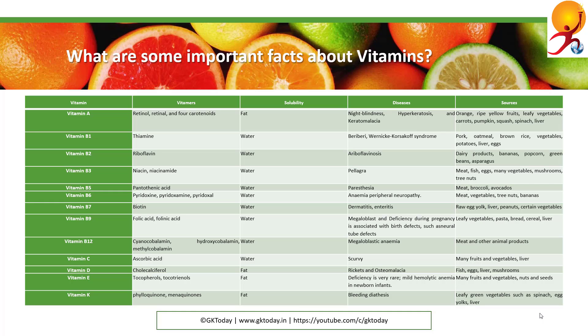Vitamin B5 is pantothenic acid. It is soluble in water. Deficiency can cause paraesthesia and it can be found in meat, broccoli, and avocados.